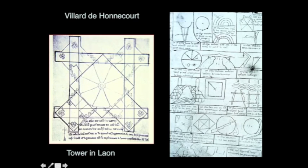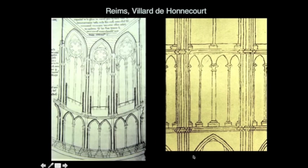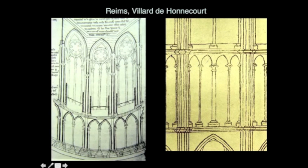Looking at more drawings by Villard, he's looking at the articulation of a cathedral wall — and the conversation we had earlier when looking at Senlis Cathedral and Durham had us paying attention to similar things. The wall is no longer just a surface with punches; the wall is this complex weaving with horizontal bands that have different articulation and vertical bands that have a really complex rhythm.